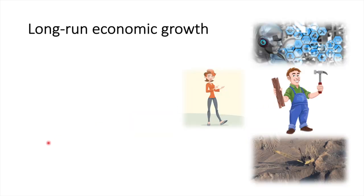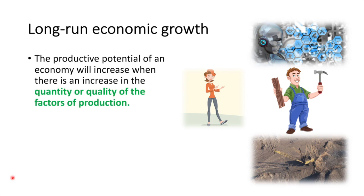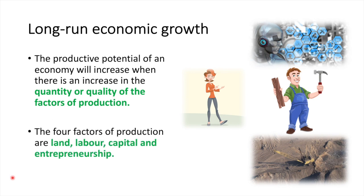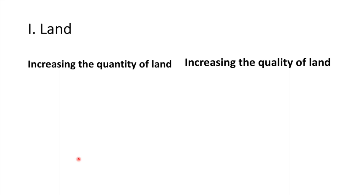The productive potential of an economy will increase when there is an increase in the quantity or quality of the factors of production. The four factors of production are land, labour, capital and entrepreneurship. Let's look at each one and consider how the quantity or quality of the factor could increase.